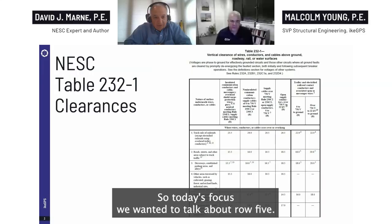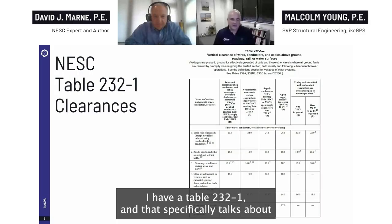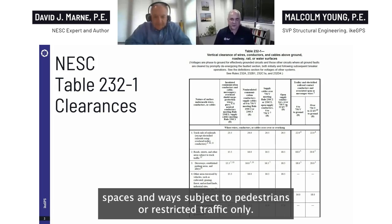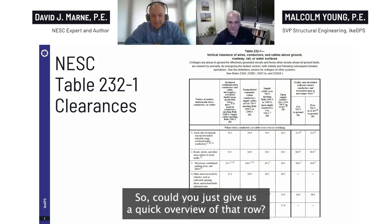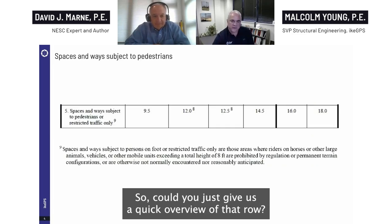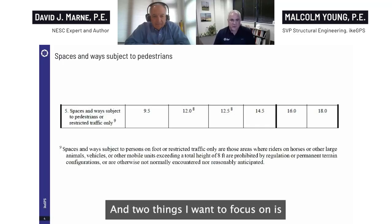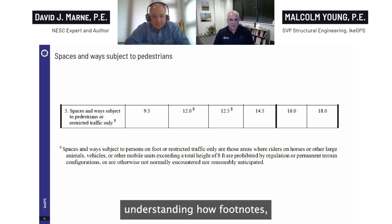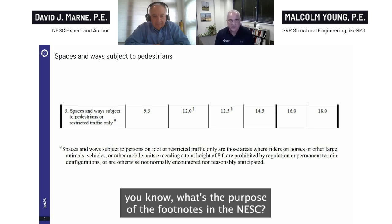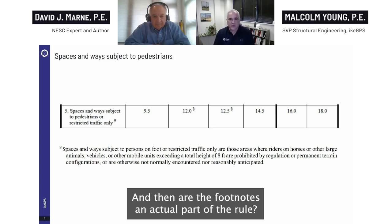Today's focus: we wanted to talk about Row 5 out of Table 232-1, which specifically talks about spaces and ways subject to pedestrians or restricted traffic only. Two things to focus on: understanding the purpose of footnotes in the NESC, and whether the footnotes are an actual part of the rule — an exception, or a 'should' versus a 'shall.'